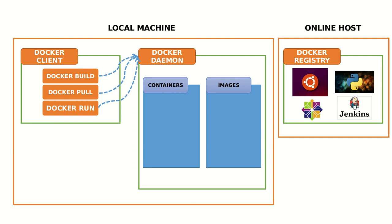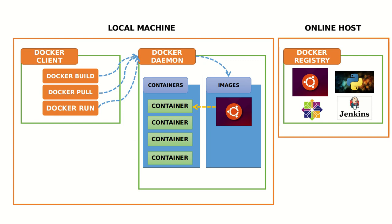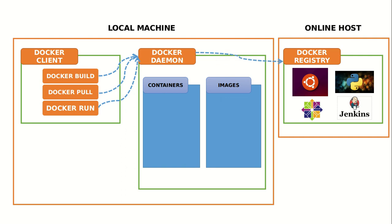Let's say I run the Docker pull command — for example, Docker pull Jenkins — meaning I want to download the Jenkins image. This command will first go to the Docker daemon. As a first step, it will always check in your local machine — it will check the images list within your local machine to see whether the image is available or not. If the image is found within your local machine, it will be used and executed as a container. If the image is not found, then Docker daemon will go to the Docker registry, search for the image, download it to your local machine, cache it, and then run your containers.